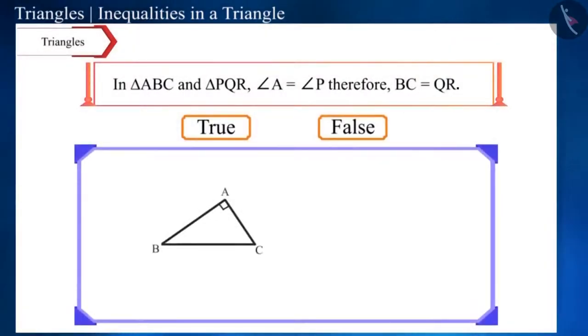Friends, triangle ABC and triangle PQR are two different triangles. Just because their angles are equal, it doesn't mean the length of their sides will also be equal. If you look at these triangles, then the measurement of both angle A and angle P is 90 degrees.